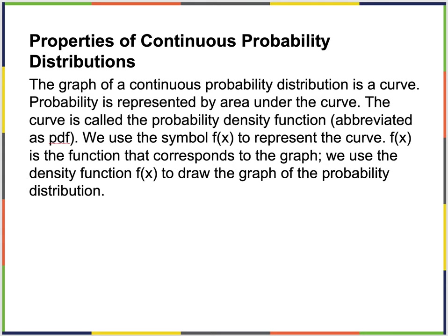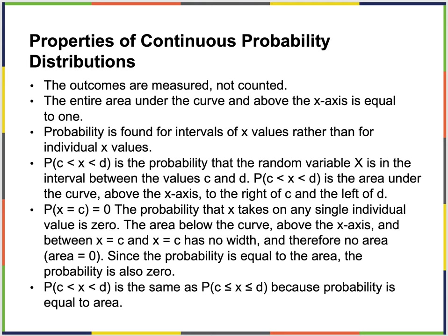We use the symbol f(x), not probability, because it's more of a mathematical function that corresponds to this graph, and we use the density function to draw the probability distribution. The outcomes are measured, not counted. In the discrete distribution, we said how many occur here, so we had the frequency and the relative frequency, which became the probability.